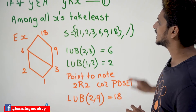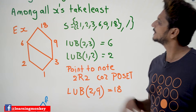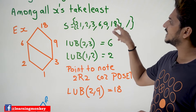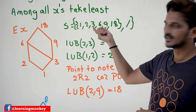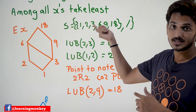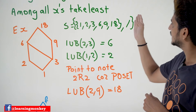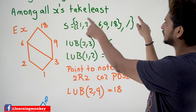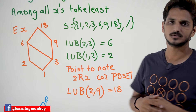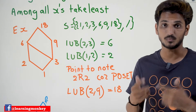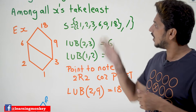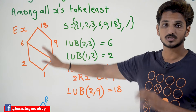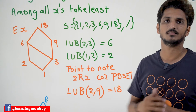Let's take an example. S = {1, 2, 3, 6, 9, 18}. This is the set of elements. On this set we have the relationship 'divided by'. This is a poset. On this poset we are constructing a Hasse Diagram. This is our Hasse Diagram.